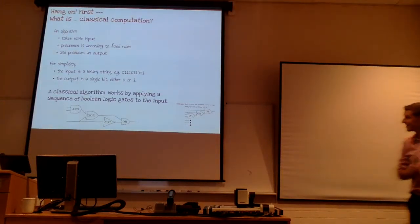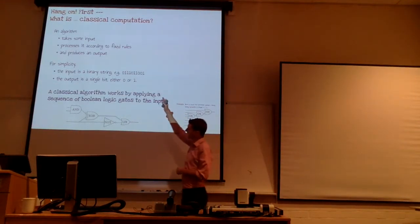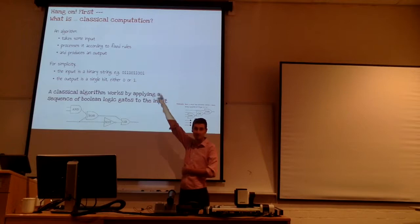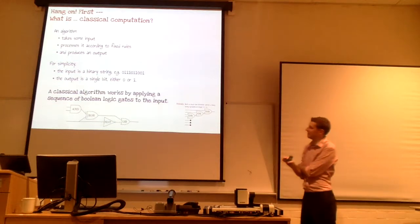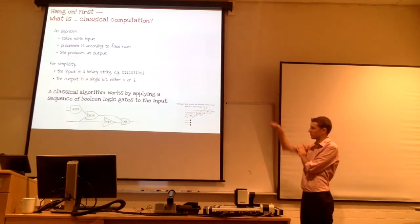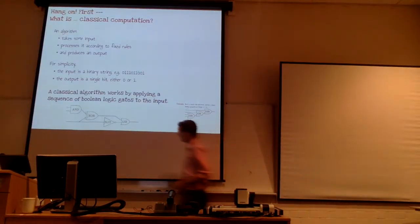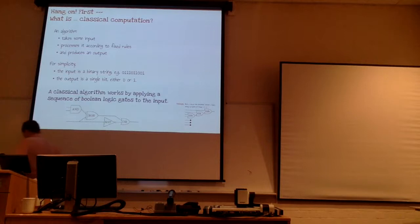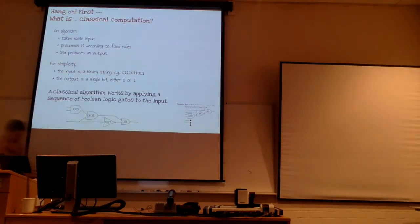An algorithm for our purposes tonight is just something that takes some input and processes that input according to some fixed rules and produces an output. A recipe for making cakes is a lovely example of an algorithm. Tonight, the input through our algorithm is always going to be a binary stream — a stream of zeros and ones. And the output is just going to be a single bit, a zero or a one. A classical algorithm takes that binary stream and applies a sequence of Boolean logic gates to that input, eventually producing one bit as output.